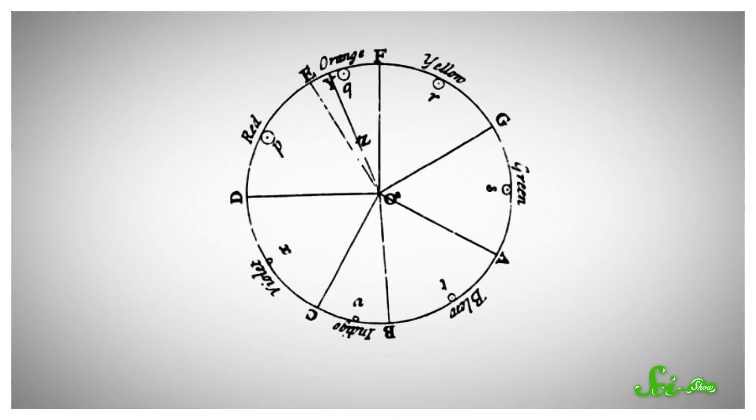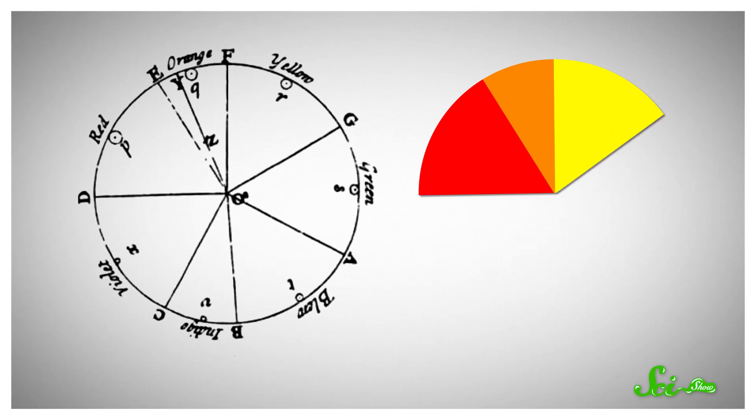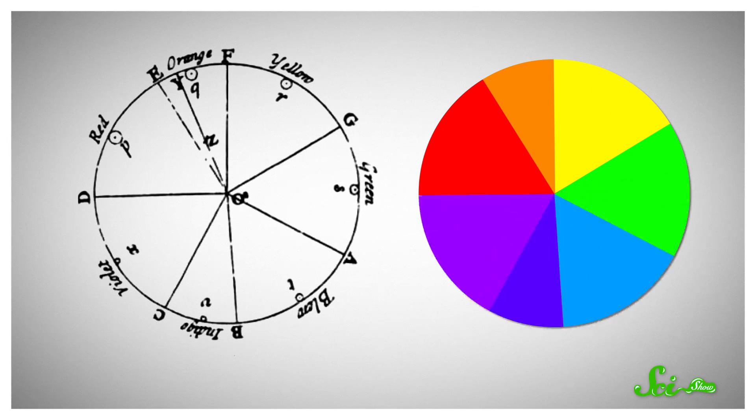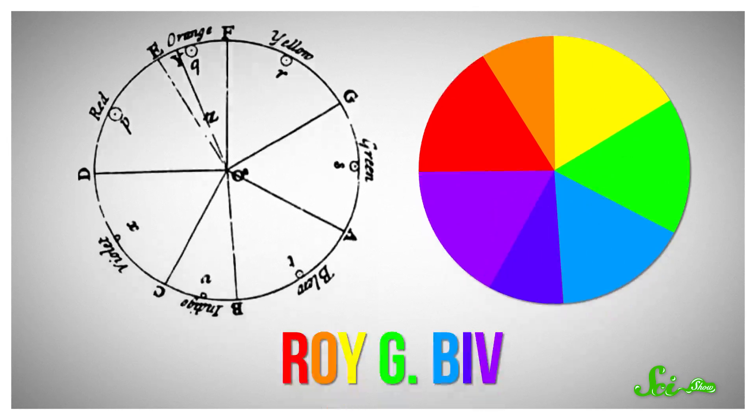Then, Newton did something that has haunted color charts and grade-school mnemonics for generations. He divided that visible spectrum into seven known colors — red, orange, yellow, green, blue, indigo, and violet. What you might know as Roy G. Biv.